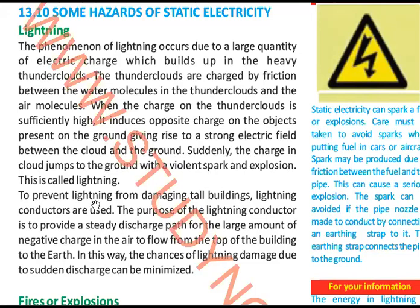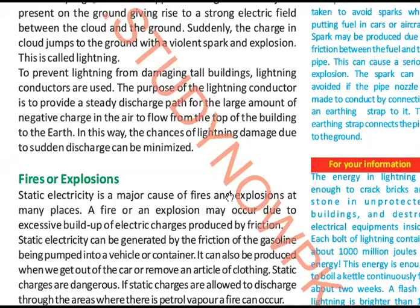Now we have to prevent lightning from damaging tall buildings. The purpose of the lightning conductor is to provide a path for a large amount of charge in the air to flow from the top of the building to the earth. They catch it, so they don't fall on the ground. In this way, the chances of lightning damage due to sudden discharge can be minimized, reducing the chances of lightning.